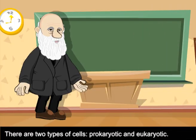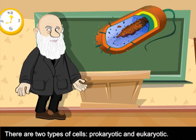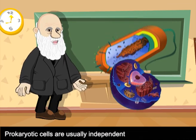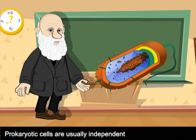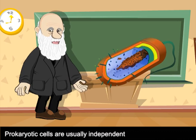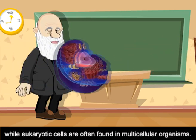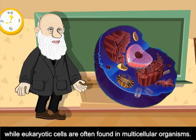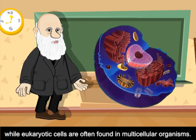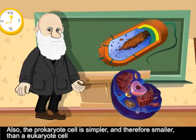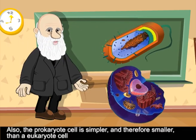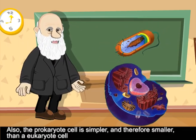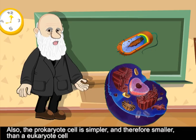There are two types of cells: prokaryotic cells and eukaryotic cells. Prokaryotic cells are usually independent, while eukaryotic cells are often found in multicellular organisms. The prokaryotic cell is simpler and therefore smaller than a eukaryotic cell.